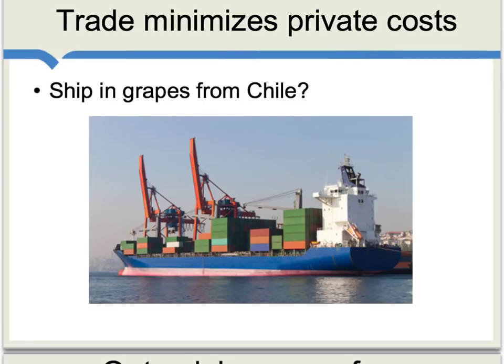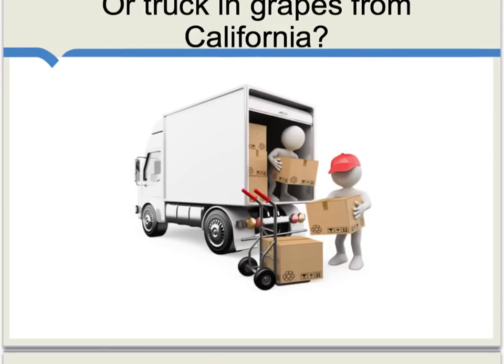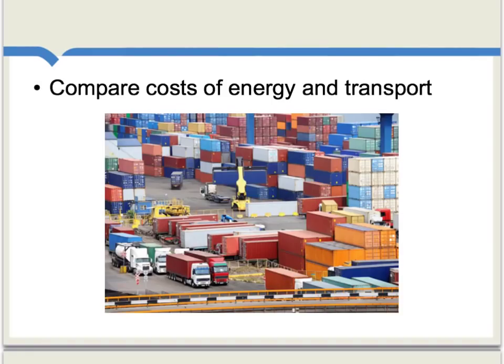Another relevant factor is that international trade tends to minimize private costs of production. For instance, should you ship grapes in from Chile on a boat, or truck in grapes from California using roads and gasoline? Private entrepreneurs will compare the costs of energy and transport, picking the option which lowers those costs, and in general that tends to be environmentally more friendly.